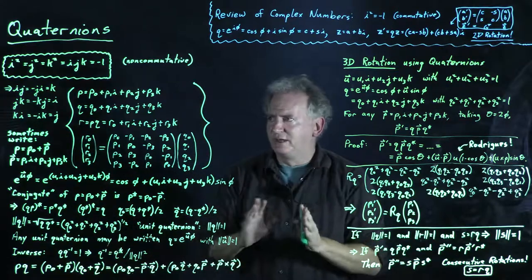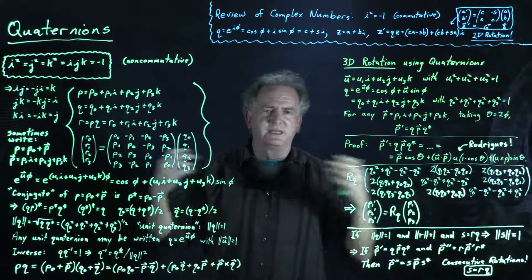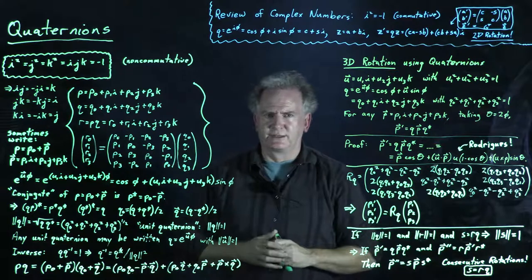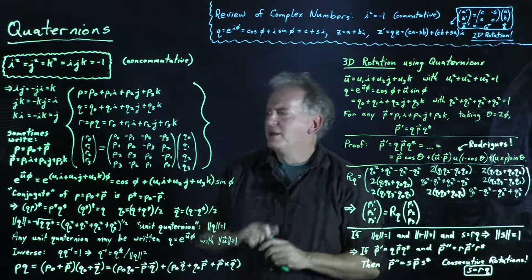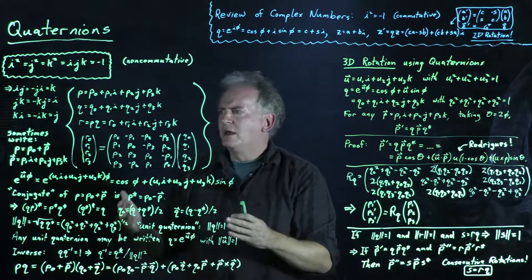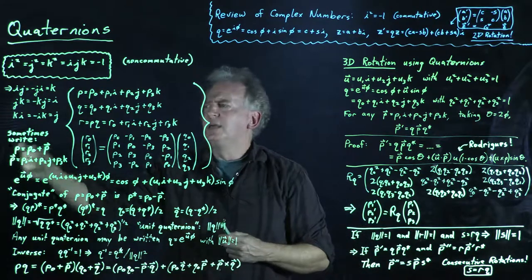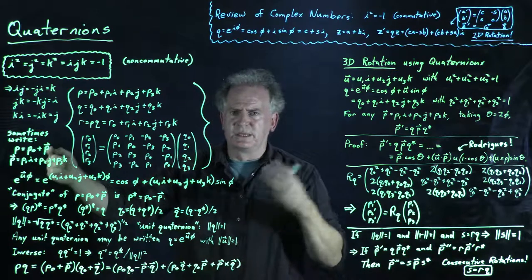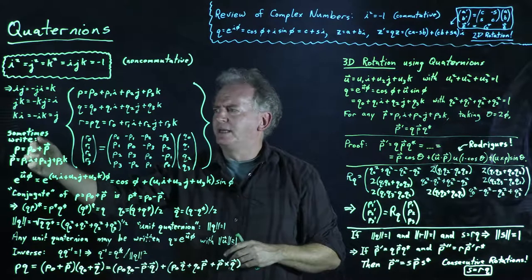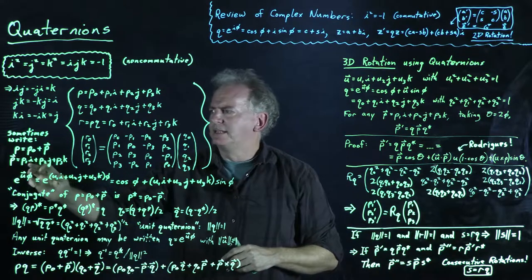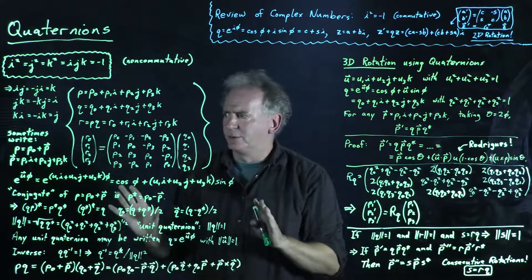The first row times the column gives r₀, the second row gives r₁, the third gives r₂, and the fourth gives r₃. This is a good moment to pause the video and verify that multiplying two four-component quaternions gives 16 components equivalent to that matrix-vector product. Seriously, go ahead and stop the video and do that product.